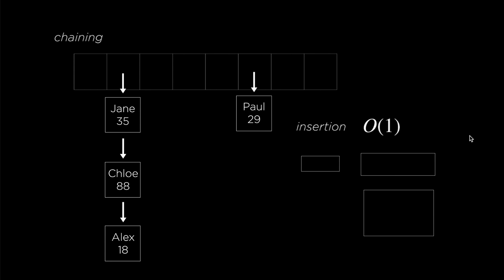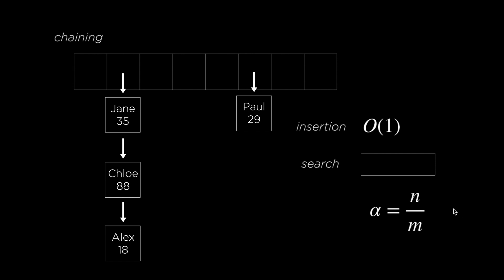With chaining, insertion only takes O(1) time, a constant amount of time. For search, let me define a few variables: n is the number of elements we have put in so far, and m is the length of the array. Alpha, which is n over m, shows how full this hash table is. Right now because n is 4 and m is 8, alpha is exactly one half. With this, you can show that search only takes O(1 + alpha) in time. This means that if you keep alpha below a certain number — let's say 1 — search would only take a constant amount of time. This O(1 + alpha) is the average time.